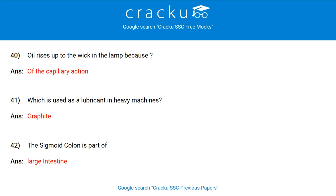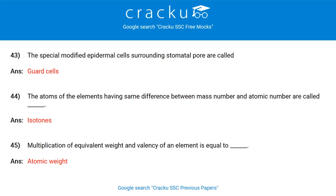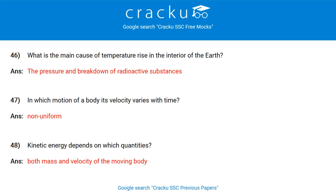The sigmoid colon is part of which organ? Large intestine. The special modified epidermal cells surrounding the stomatal pore are called guard cells. The atoms of elements having the same difference between mass number and atomic number are called isotones. Multiplication of equivalent weight and valency of an element is equal to atomic weight. What is the main cause of temperature rise in the interior of the Earth? The pressure and breakdown of radioactive substances. In which motion of a body does its velocity vary with time? Non-uniform motion.